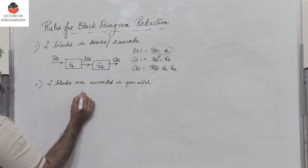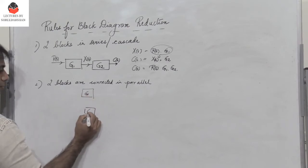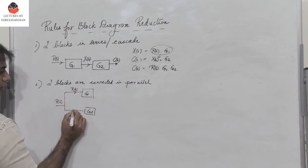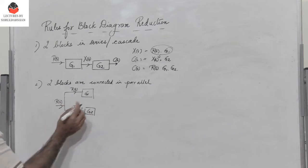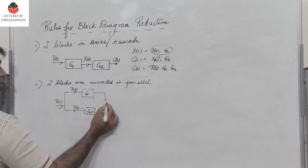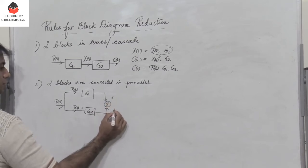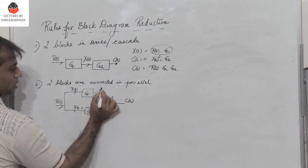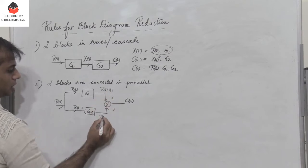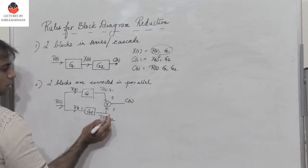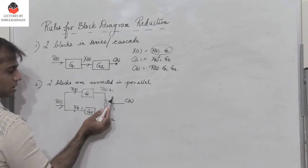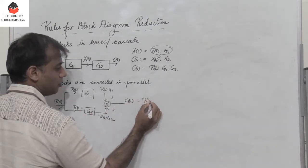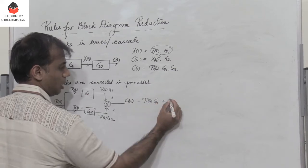If two blocks are connected in parallel, let us assume two blocks with transfer functions g1 and g2, and input r of s. The two blocks receive the same input r of s. These two blocks are in parallel and their outputs are either added or subtracted, giving output c of s. The output from g1 is r of s into g1, and from g2 is r of s into g2. So c of s equals r of s g1 plus or minus r of s g2.